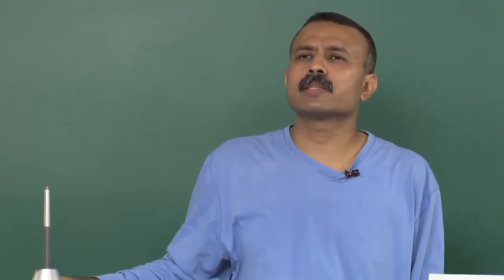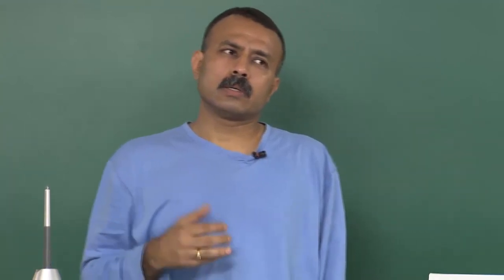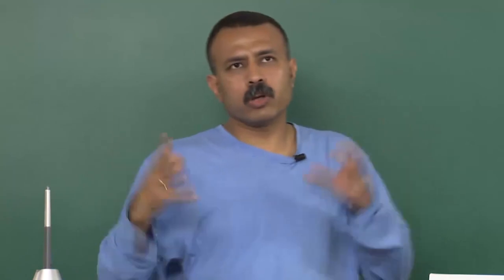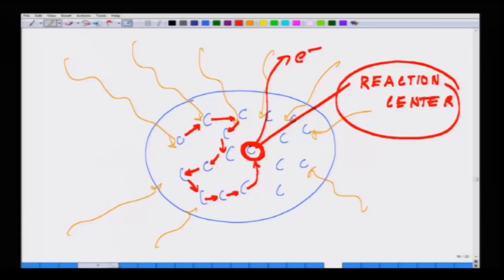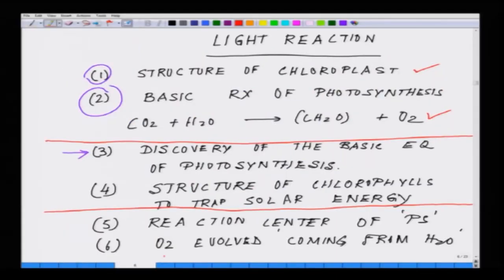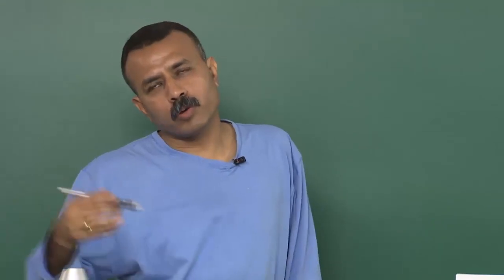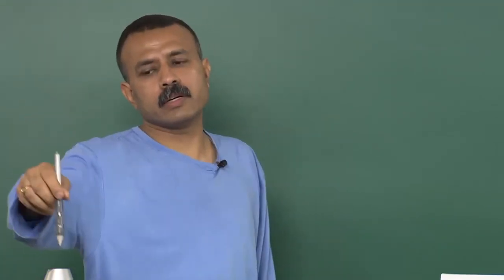One speculation is that because of the reaction center concept, the longevity of the leaf increases, because not all molecules are in an excited state just because of light. With this concept, I will close this class. In the next class, we will discuss how the reaction center was discovered, the different experiments performed, and how these will be translated in terms of energy production. Thanks a lot.